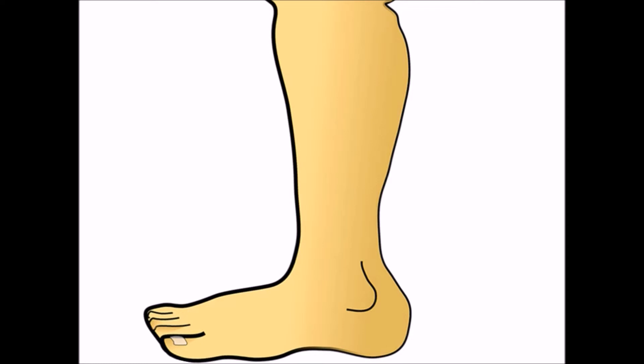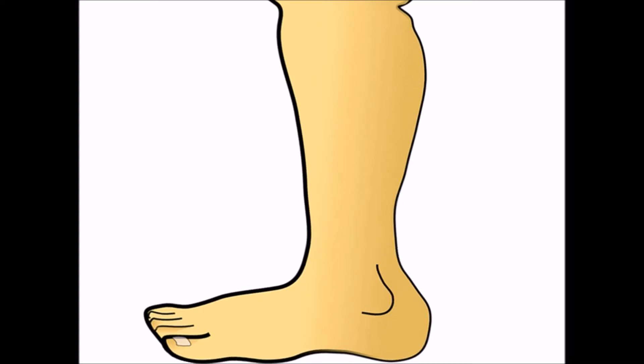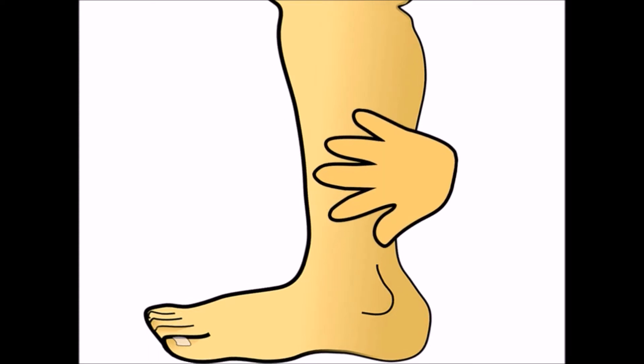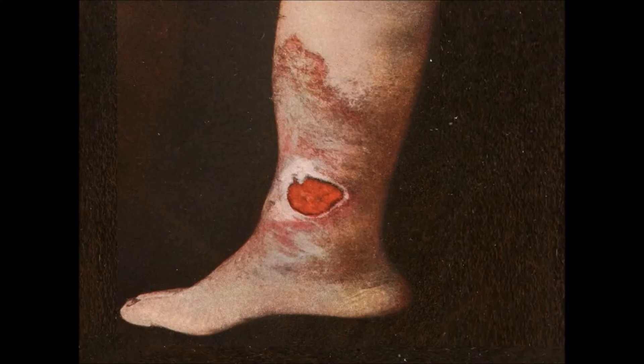These varicose veins can give rise to complications like swelling in legs, itching, and ulcers which over time can increase and start bleeding. This is an example of a varicose ulcer.